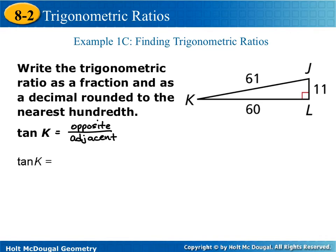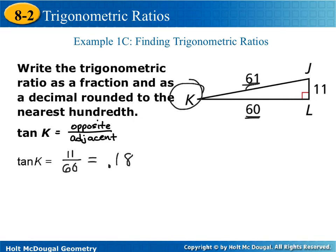And lastly, we have write the trigonometric ratio as a fraction and as a decimal for the tangent of angle K. Tangent is opposite over adjacent. What side is opposite of angle K? 11. And what's the adjacent? 60. So we have 11 over 60. 61 is next to angle K and 60 is next to K, but 61 is the hypotenuse, so the leg that's adjacent would be 60. That's why we use 60.